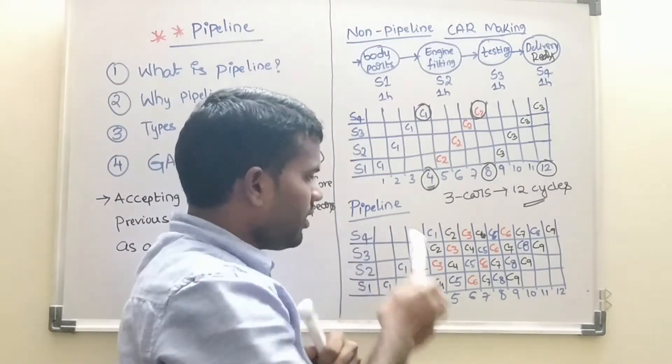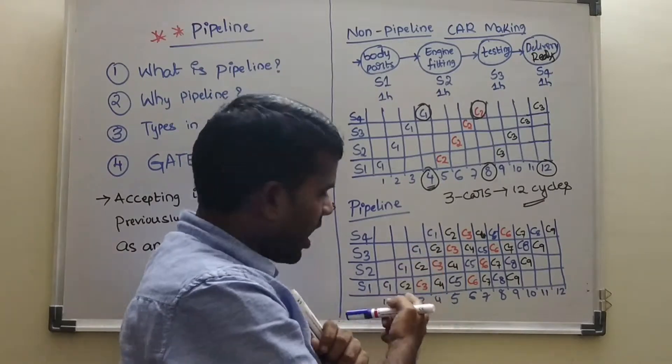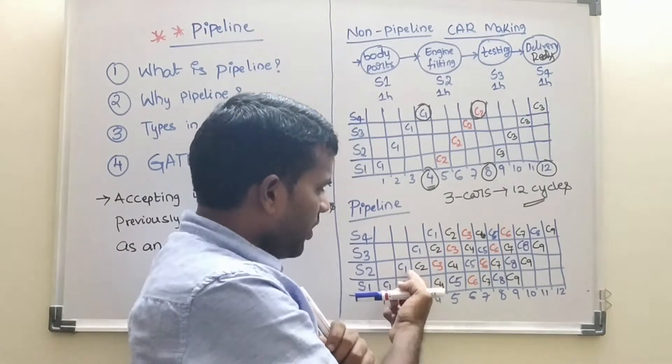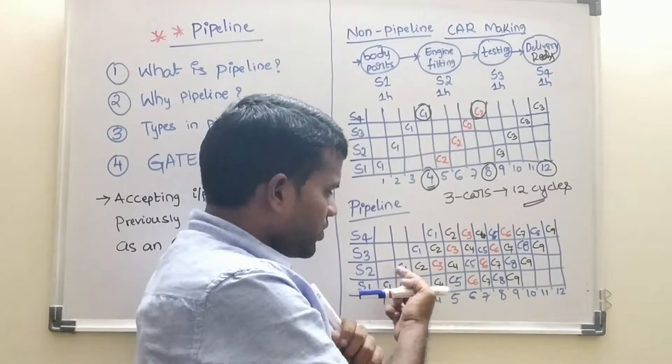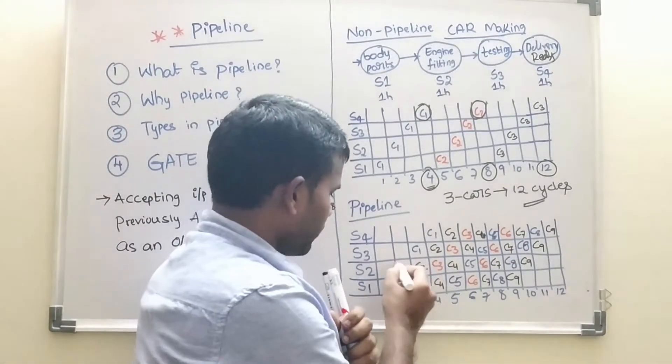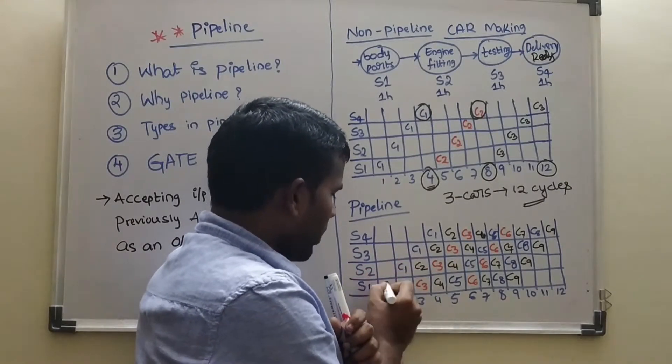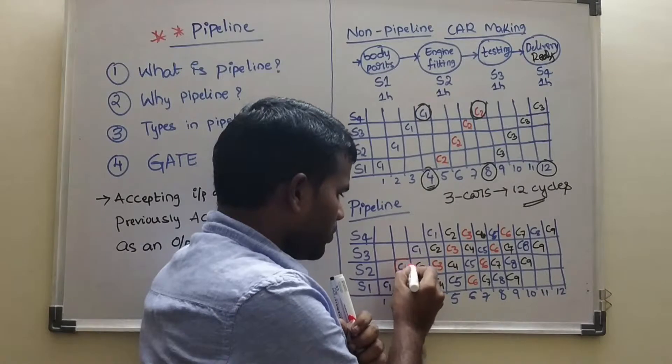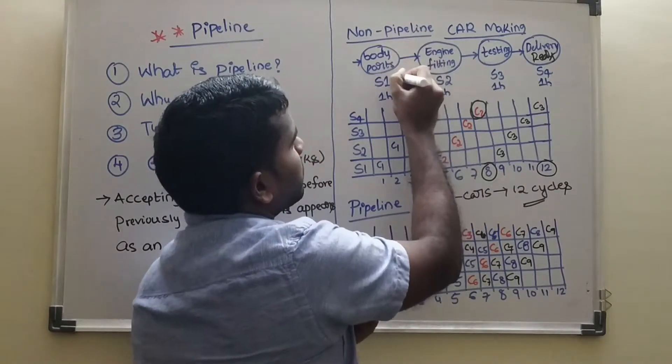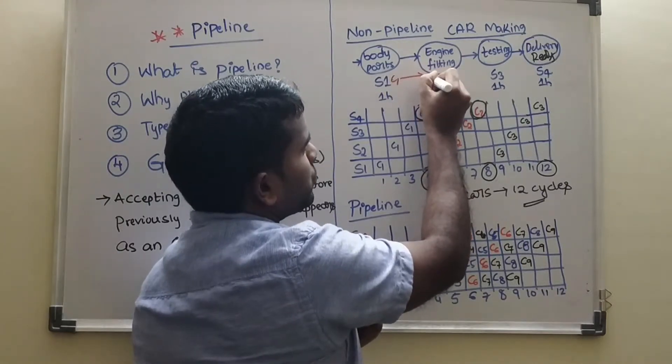Total 4 stages are there. So first, C1, C1, C1, C1. Car 1 is in stage 1. Car 1 go to stage 2. Whenever car 2 go to stage 1. Whenever car 2, car 1 is going to stage 2. So here, whenever from C1, here 2 go to stage 2.